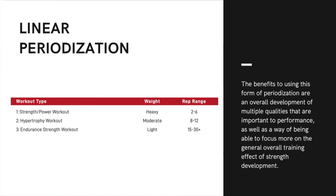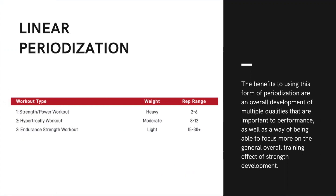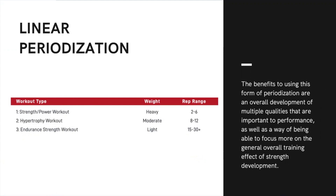Obviously to get stronger and gain strength we need to use heavy load, but we do it for low reps. Then you can move into a second phase, which is hypertrophy, using moderate weights and a rep range between eight and 12 reps. Then you go into the third phase, called the endurance strength workout, where we use light weights and the rep range is between 15 and 30 plus.